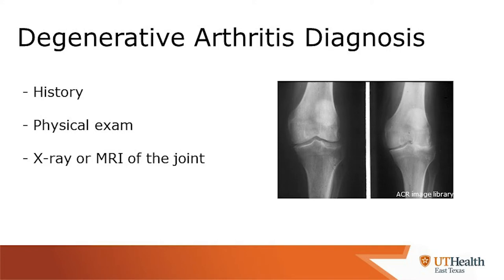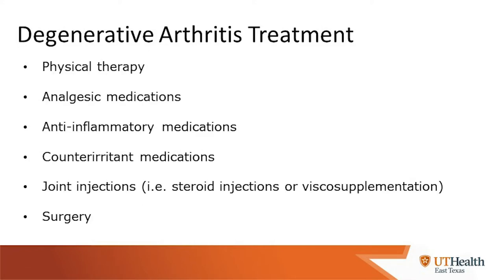Here we see a picture on the right of bone-on-bone disease, which is a depiction of late-stage osteoarthritis. Treatments include physical therapy to help strengthen the muscles, medications that target pain, medications that target pain and inflammation, topical medications, and joint injections including steroid injections and viscosupplementation. A last resort measure when everything else fails is surgery.